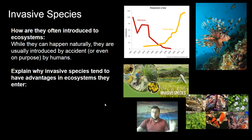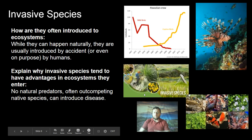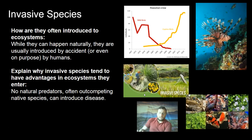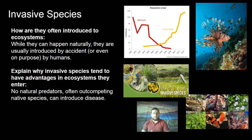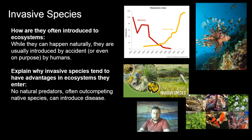Invasive species tend to take advantage of ecosystems they enter because they usually don't have any natural predators. The predators that live there don't recognize them and won't eat them. So without natural predators, they grow without limits, without being hunted. They also sometimes have features that out-compete the native species, which causes the native species to be displaced.